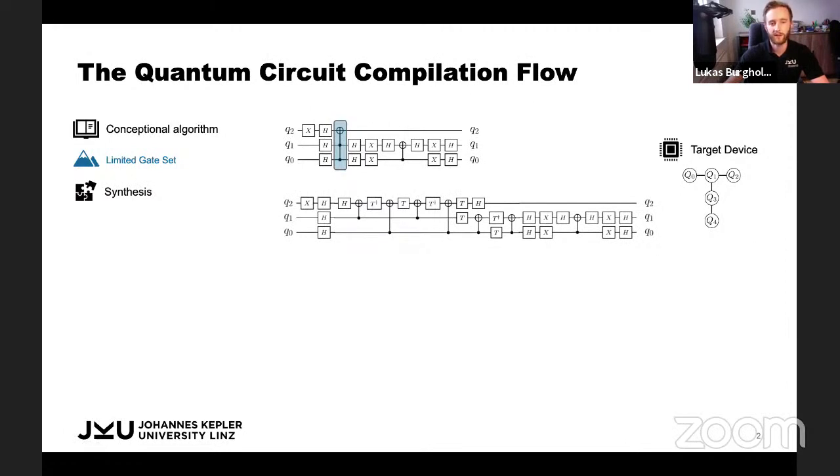It now consists of all the gates that are supported by the device, but not all the gates might be executable on the device because there's the coupling graph and only those qubits may interact with each other. So we need a mapping step because the connectivity is limited.